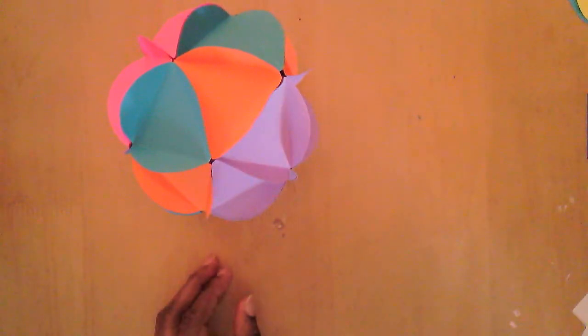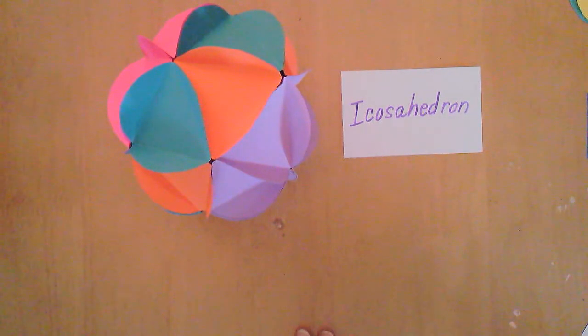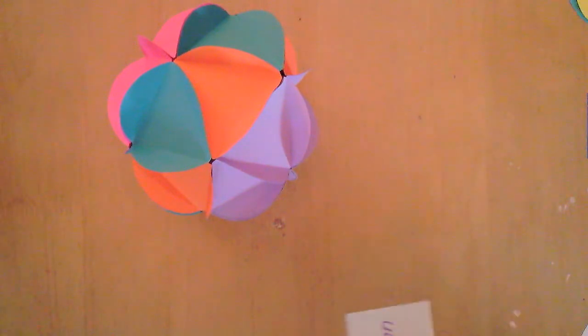It's called an icosahedron. It is a geometric form that has 20 sides.